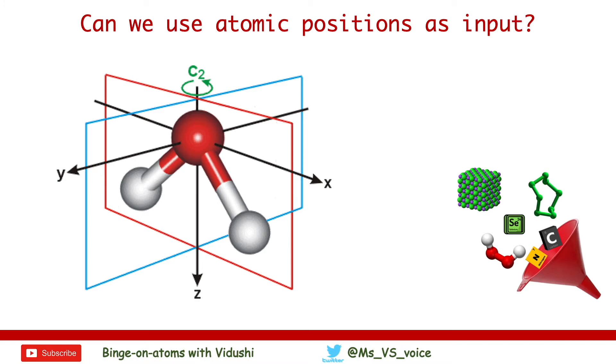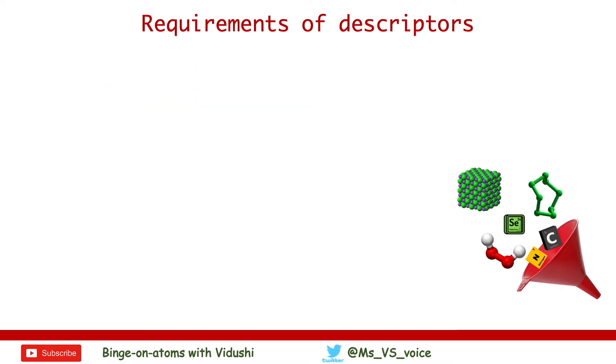If Cartesian coordinates are used in neural networks, the energy would not be trans-rotationally invariant. So before we speak of descriptors, let's speak of basic requirements for descriptors.